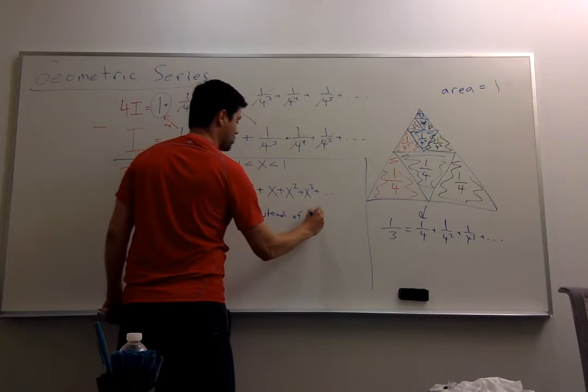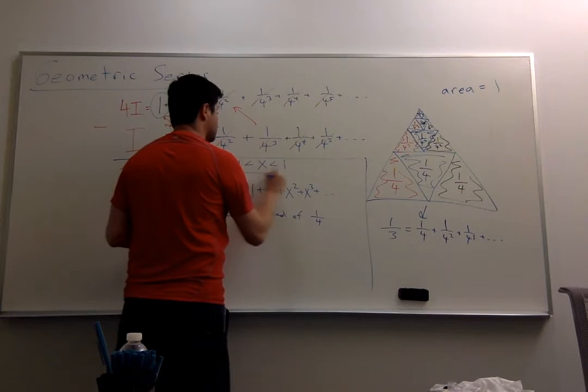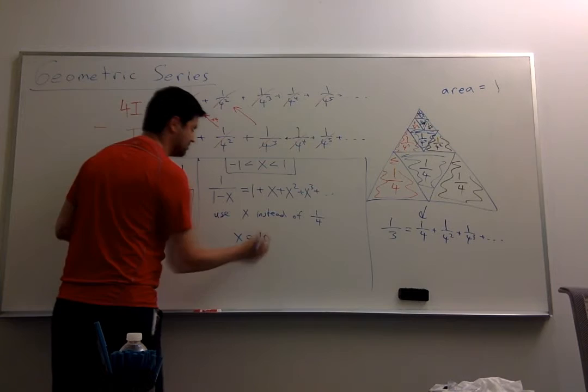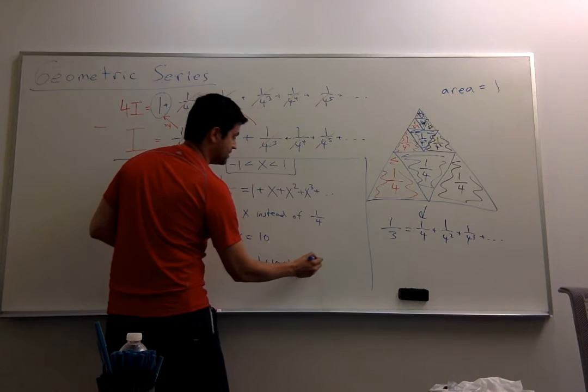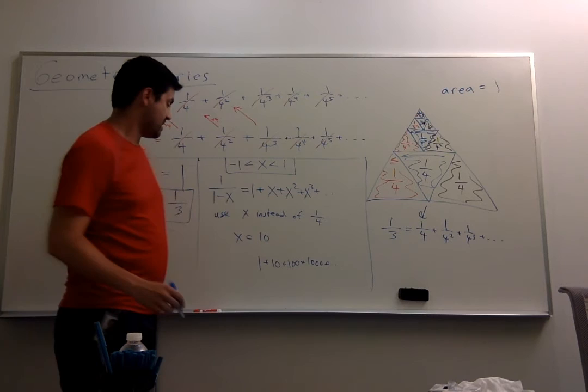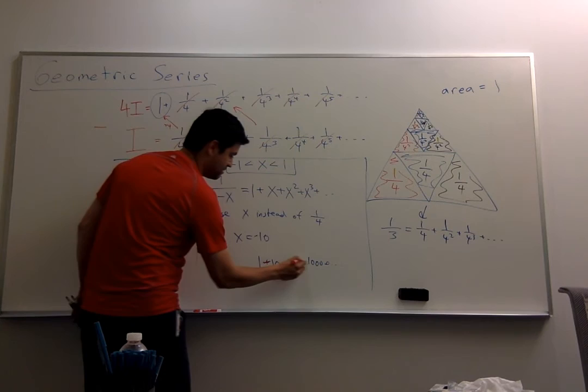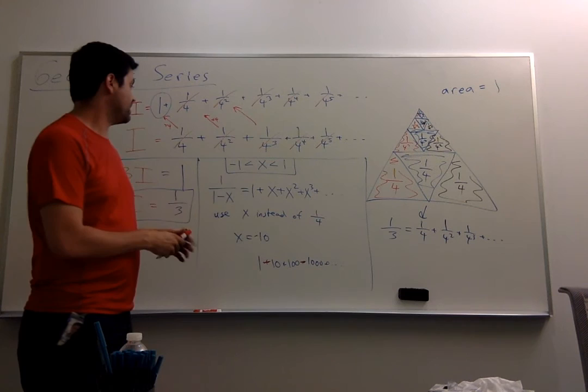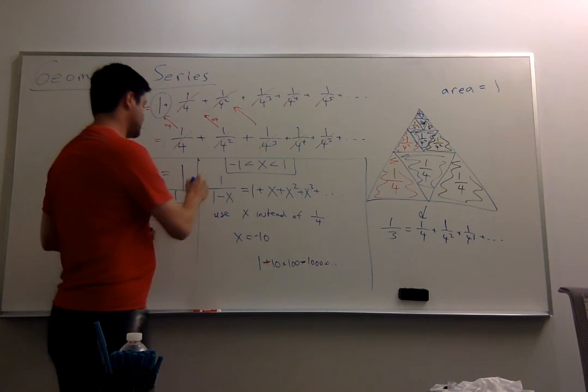Notice that this constraint is important, because if I have x is equal to, I don't know, 5 or 10, then this is going to be 1 plus 10 plus 100 plus 1,000. You're subtracting and adding big numbers, this makes no sense. But if x is between minus 1 and 1, this works. And this is the simplest of the geometric series.